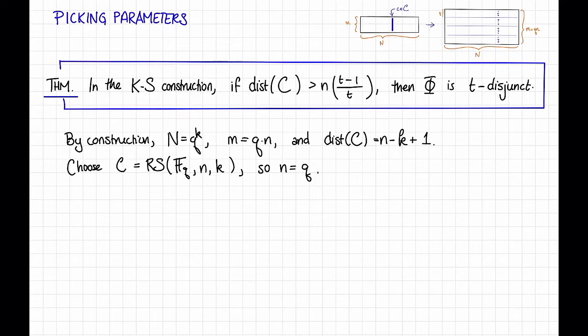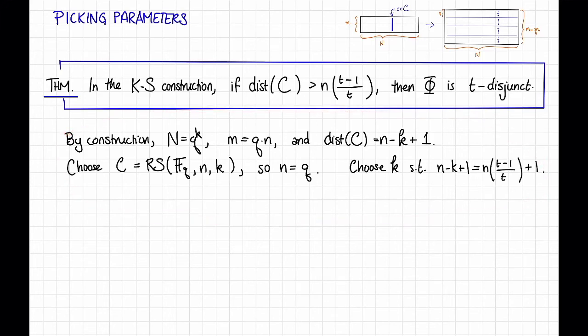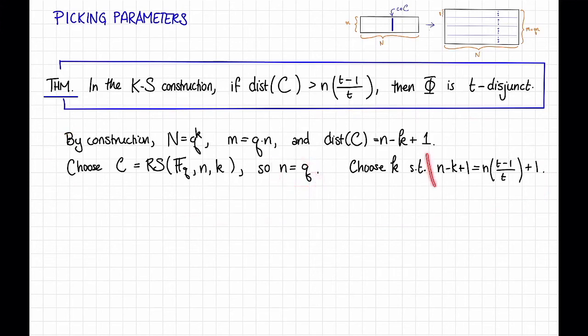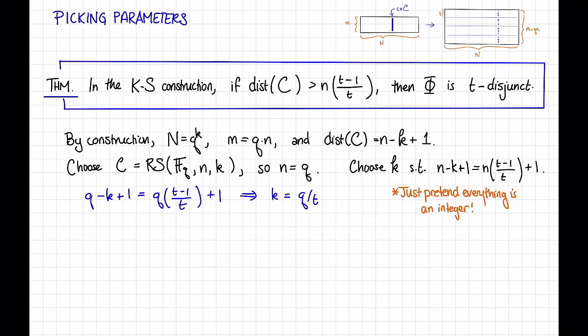Okay, so now we need to choose the parameters k and q. Here's how we're going to do it. So first, we're going to want this distance to be strictly greater than this value so that this theorem applies. So let's choose k such that this thing is equal to this thing plus 1. Then this strict inequality will be satisfied. Okay, and now let's see what implications all of these choices have. So first, we said that n was equal to q. So let's just write this down and put a q in for n. So we get q minus k plus 1 should be equal to q times t minus 1 divided by t plus 1. And if we do some algebra, this implies that k is equal to q divided by t. Okay, I guess technically we should be choosing k with some floors or ceilings or something because it better be an integer, but let's just ignore that for now.